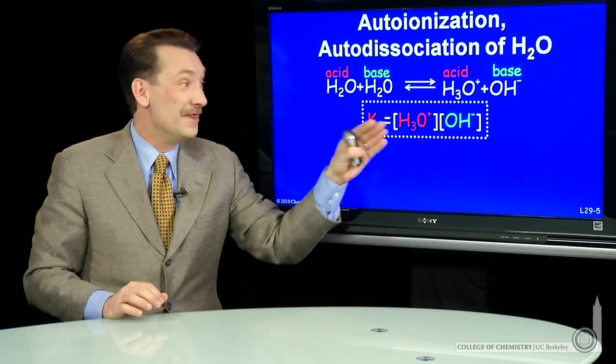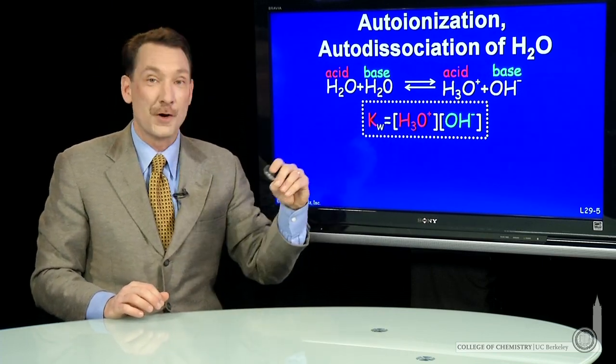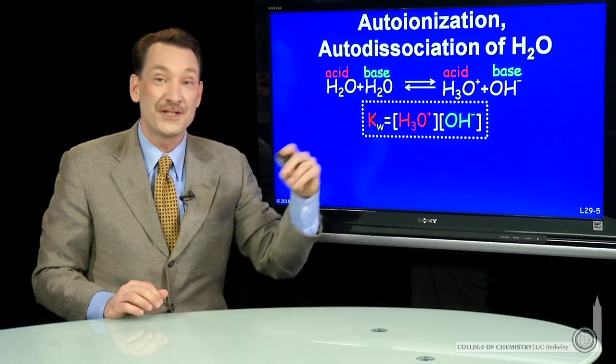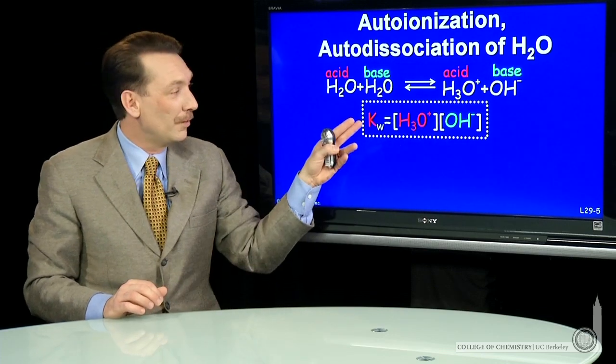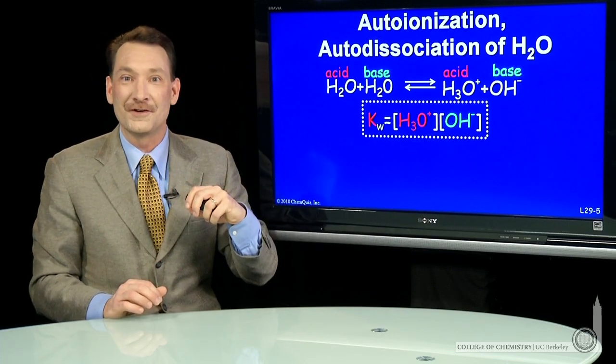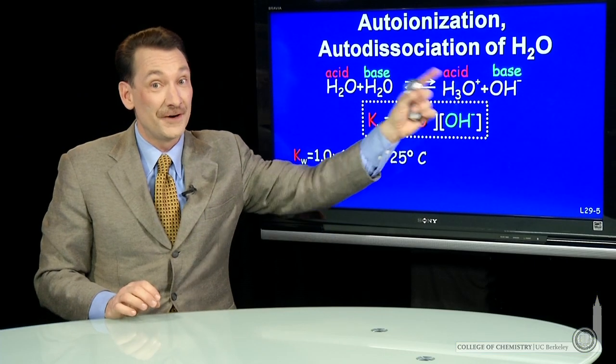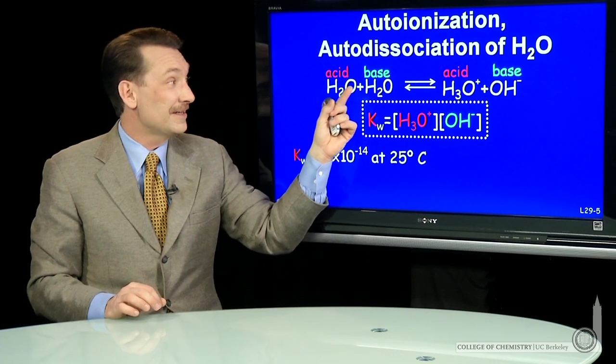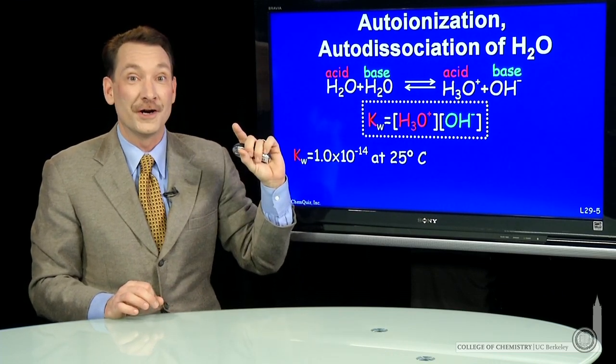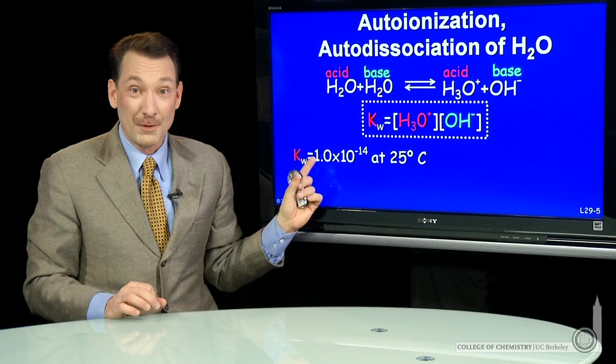So in water, this is always true. The H3O+ concentration times the OH- concentration will be the equilibrium constant for that reaction. The equilibrium constant for that reaction at 25 degrees C is 10 to the minus 14. So you can see this doesn't happen very significantly. Acid base forms of water have a very small k.